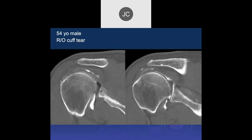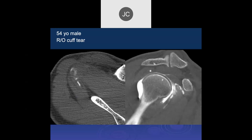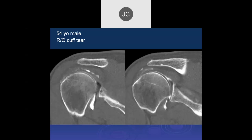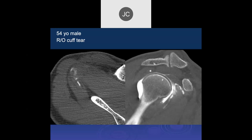Another longitudinal tear — this is a CT arthrogram. Arthrogram contrast extends into the substance of the supraspinatus to the musculotendinous junction, meaning there's at least an interstitial tear that communicates with the joint. This is the same finding on CT arthrogram — we rarely see these, but it's what you'd expect.